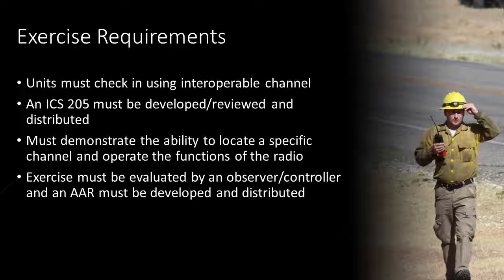The ICS 205 can be developed by the training officer in advance of the exercise and provided as participatory material. Each participant must be able to locate a specific radio channel in their radio and operate the various functions of the radio, such as turning scan on and off, activating the transmit mode on the radio, selecting between zones, groups, and channels, and increasing or decreasing the volume.